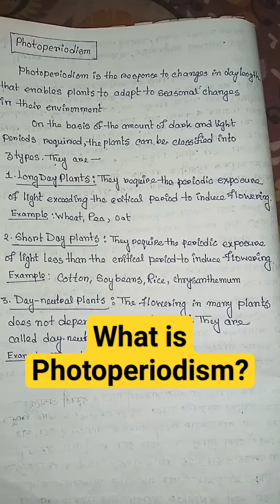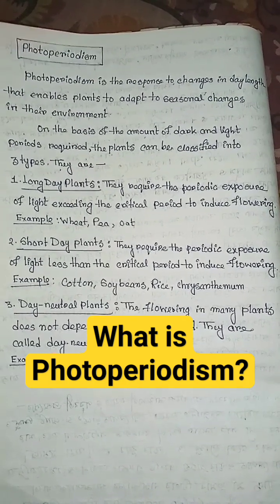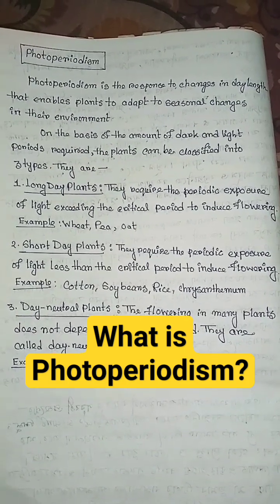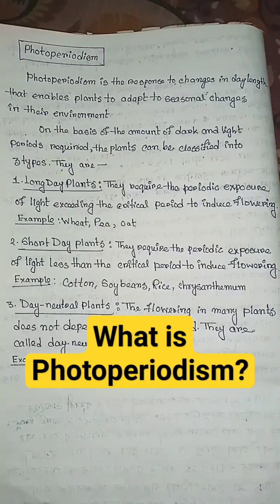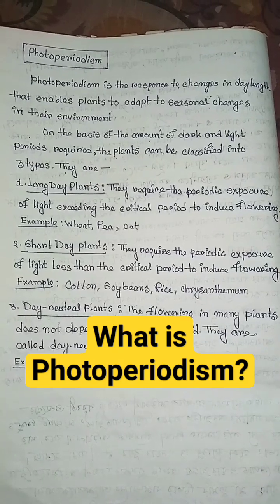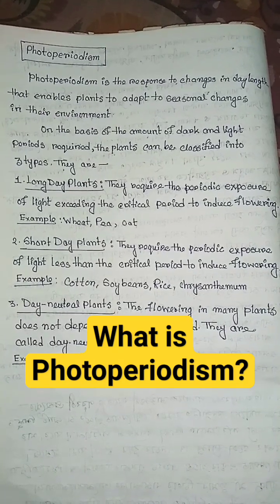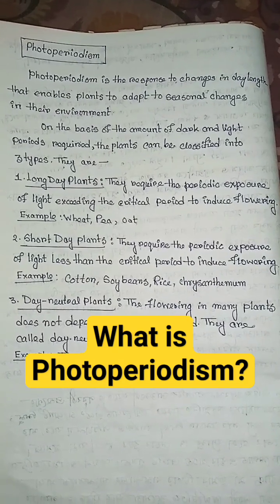Day neutral plants: the flowering in many plants does not depend on the photoperiod. These are called day neutral plants. Examples include tomato, cucumber, etc.